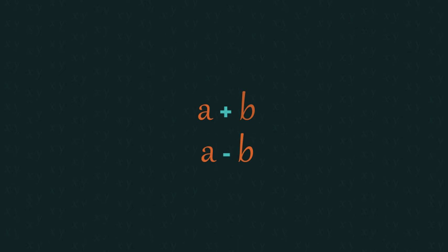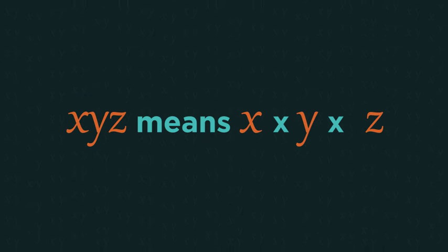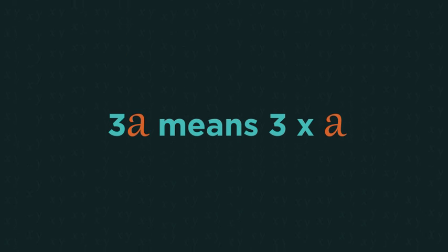So let's have a look at some of the key notation. Adding and subtracting stays the same, but instead of writing the multiplication sign we can remove it and just write AB instead. So if you ever see two letters next to each other or a number and a letter, then it just means to multiply those things together.